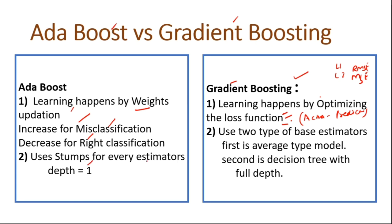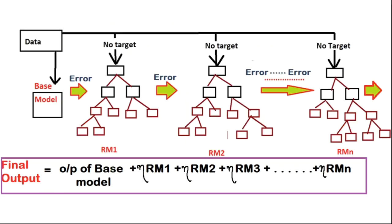In AdaBoost, we were using stumps for every base estimator. A stump is a decision tree with only one split. In gradient boosting we cover two types of models: the first model is an average model, and after that all consecutive models are decision trees grown to full depth — they can go to any number of levels.